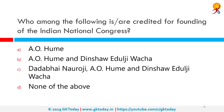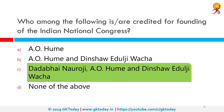Who among the following is or are credited for the founding of the Indian National Congress? Again, a very important question. Option C is correct: Dadabhai Naoroji, A.O. Hume, and Dinshaw Wacha. The Indian National Congress is a broadly based political party in India currently. However, when it was founded in 1885, it was the first modern nationalist movement to emerge in the British Empire in Asia and Africa — the first nationalist movement of the modern age across the entire British Empire.